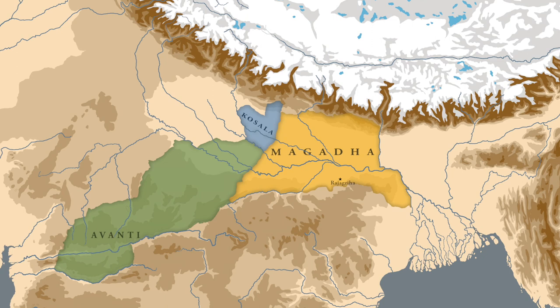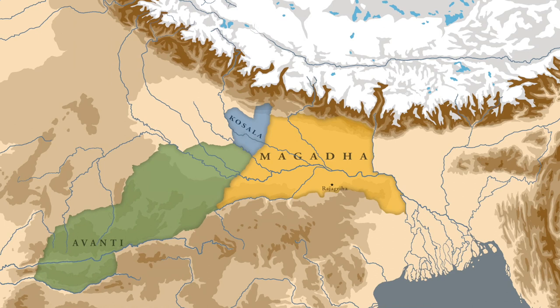The new king, Shishunaga, was at the time governing the Mahajanapada of Kashi. He was an Amatya — a term used during this period for a high official — and since he was an Amatya, he knew the art of governing. When Shishunaga became the new Magadhan king, the first thing he did was make Vaishali the second capital of Magadha. The reason behind this shift was that Rajgriha was much closer to the Avantian border and would be the first target for the Avantian army in any future conflict.